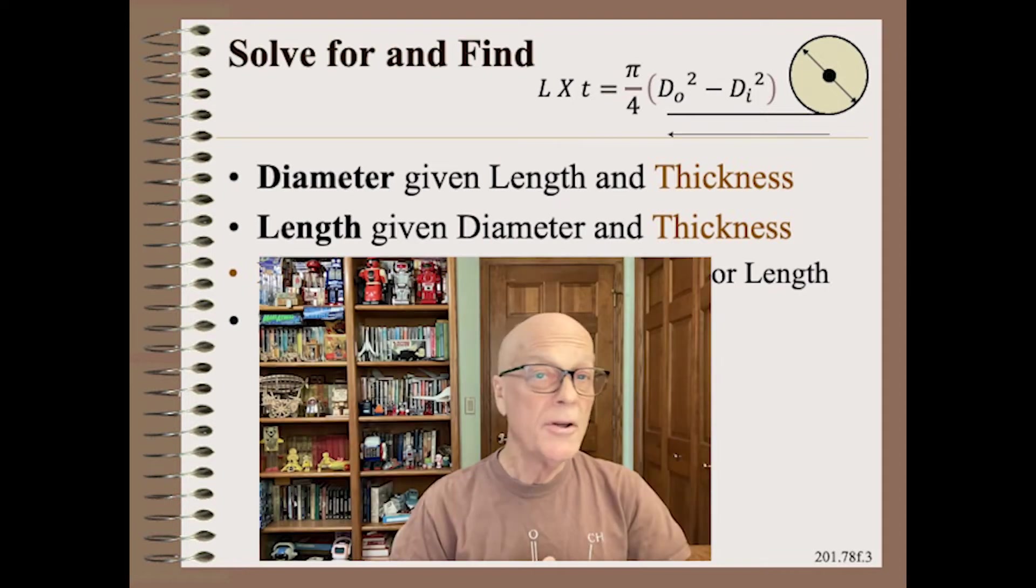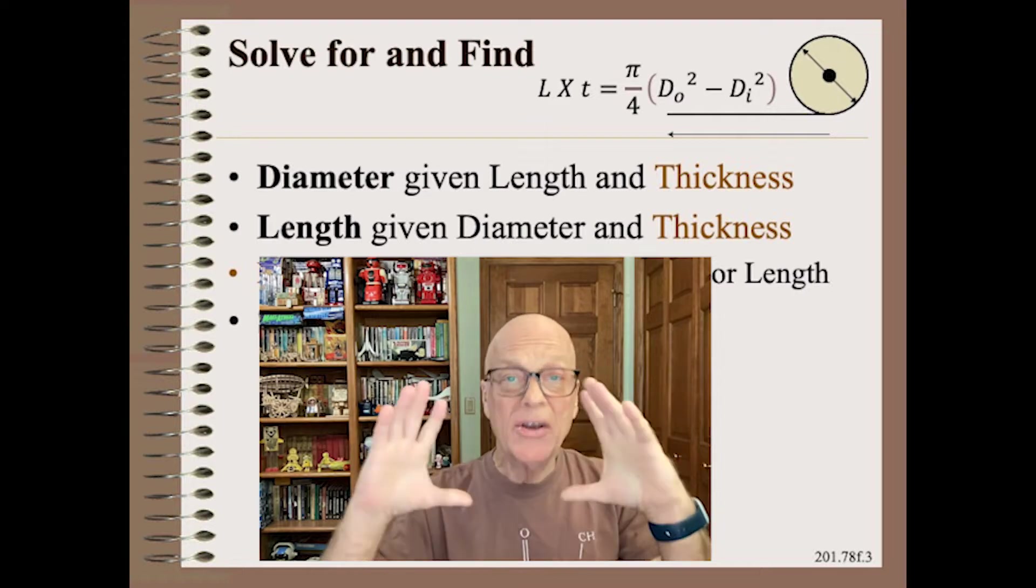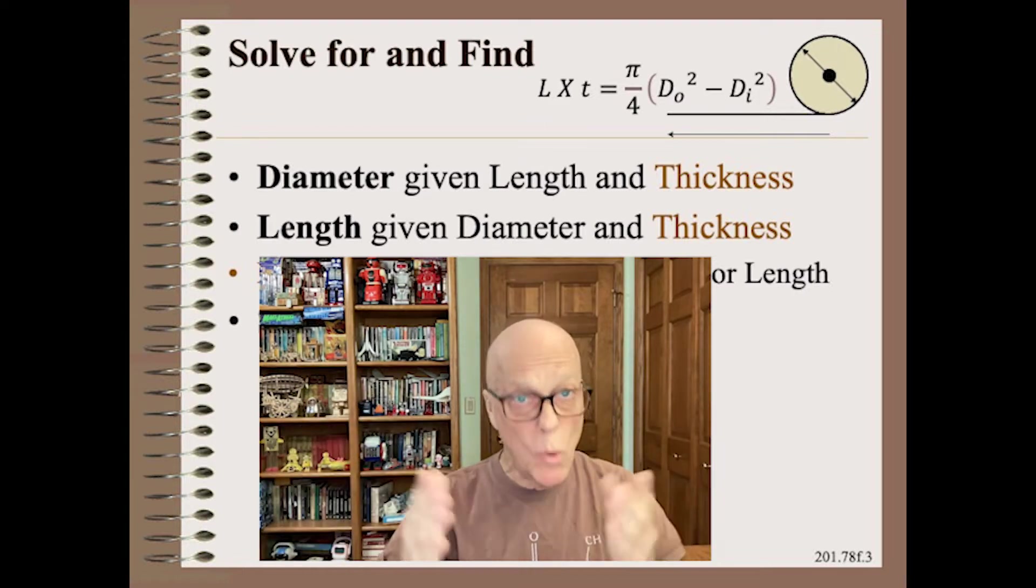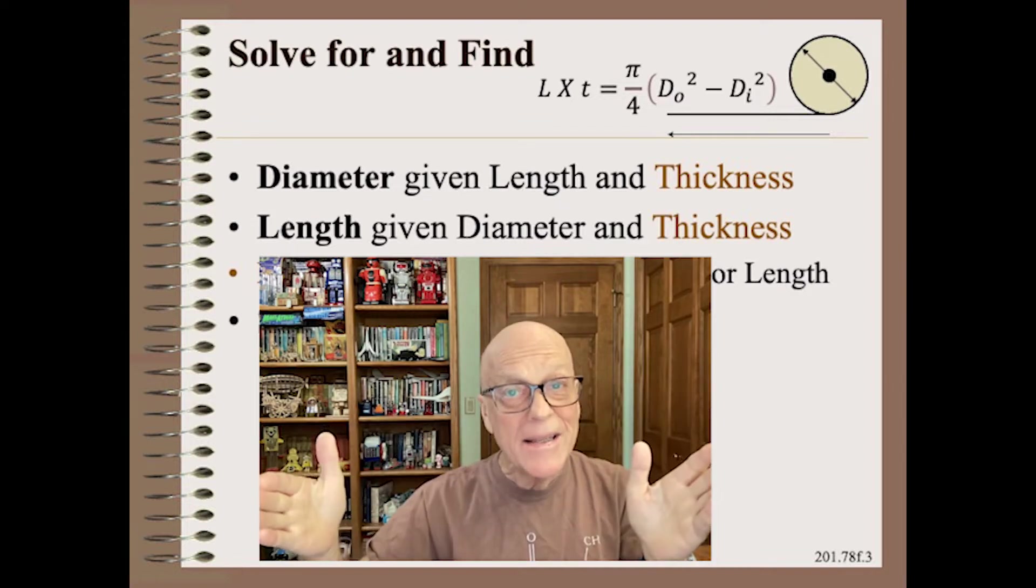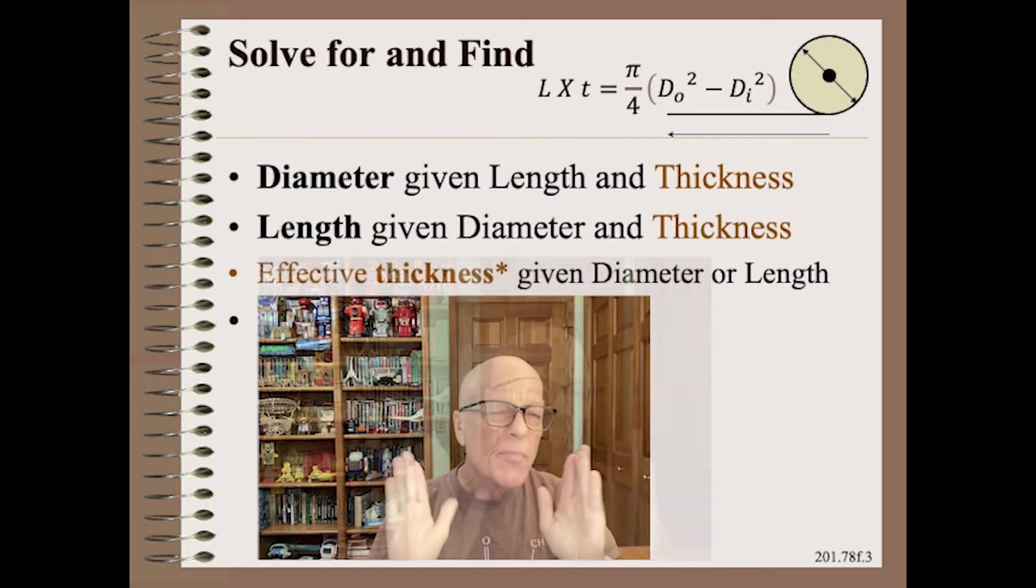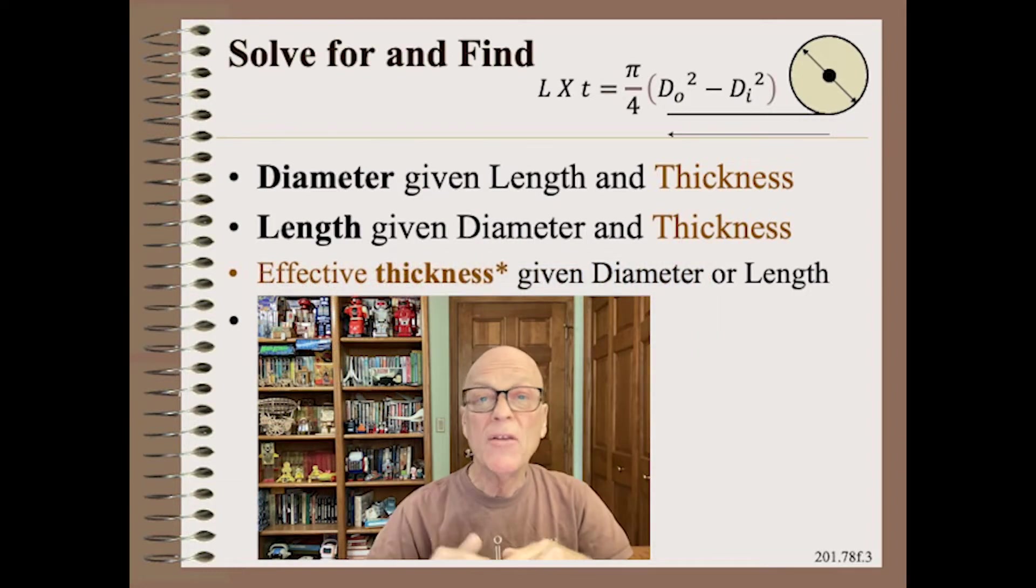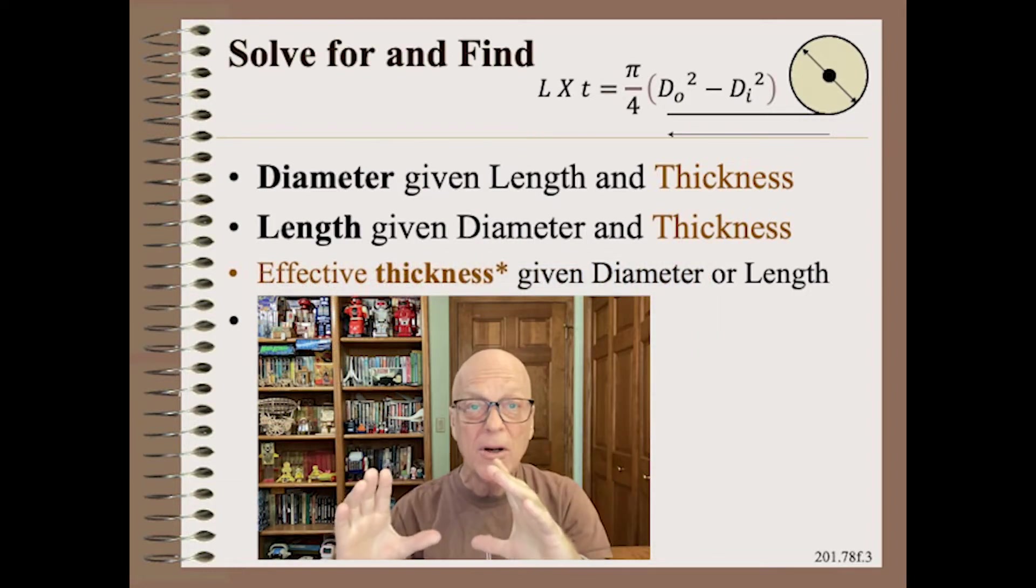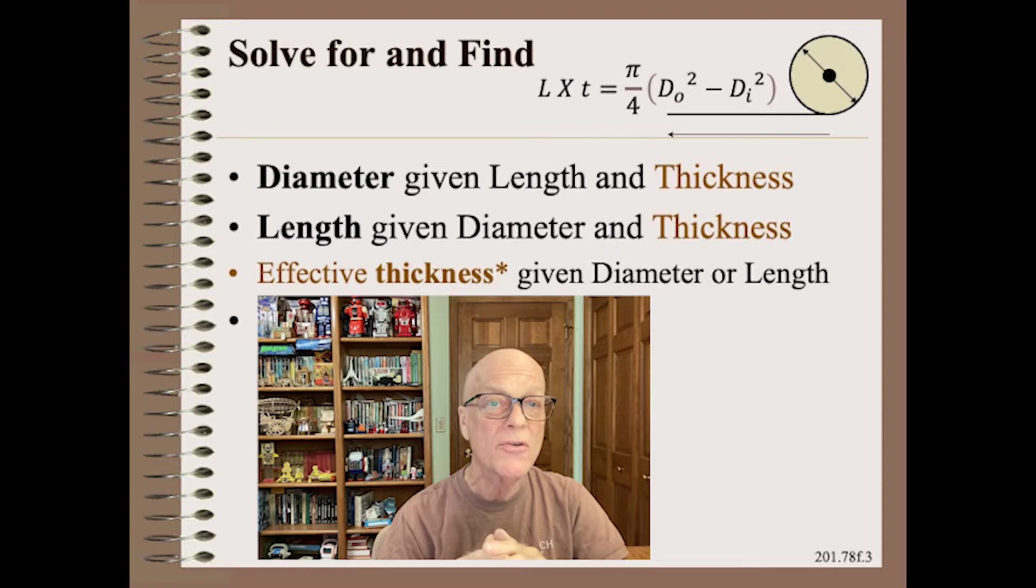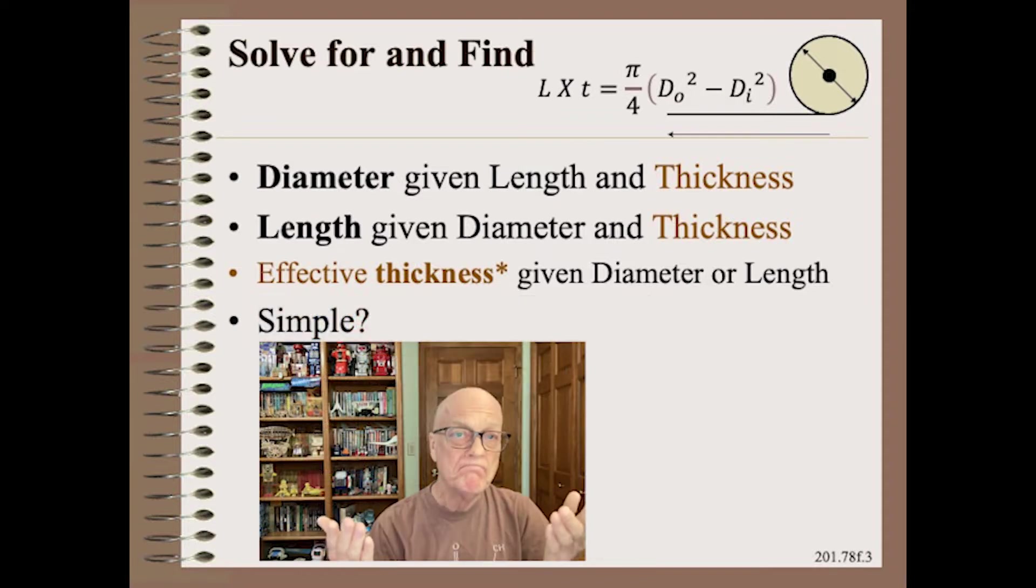You can use this equation in several ways. You can predict diameter if you know length and thickness, or you can predict length if you know diameter and thickness. Alternatively, if you knew the wound roll's diameter and length, you could calculate a special type of thickness that we will use later. So, what could be simpler?